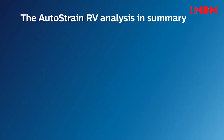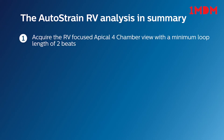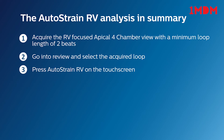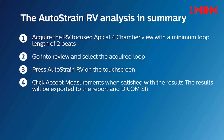Summarizing the right ventricle auto strain analysis: acquire the RV-focused apical 4 chamber view with a minimum loop length of 2 beats. Go into review and select the acquired loop. Press Autostrain RV on the touch screen. Click Accept measurements when satisfied with the results. The longitudinal strain results will be exported to the report and DICOM structured report.